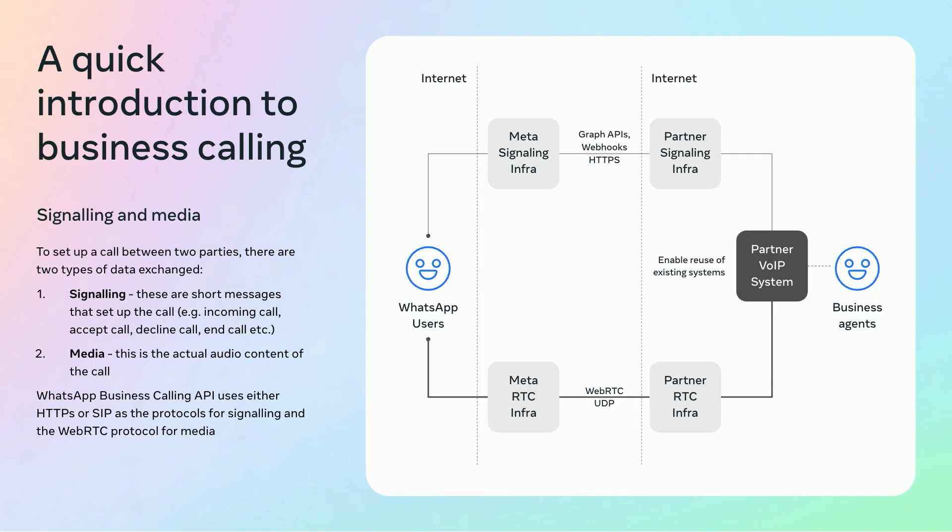In order to set up a call between two parties, there are two types of data exchanges: signaling and media. Signaling data are short messages exchanged between the parties to set up the call — some examples are incoming call, call accepted, and call declined. Media data is the actual audio content of the call. The WhatsApp Business Calling API uses either HTTPS or SIP for signaling and the WebRTC protocol for media.